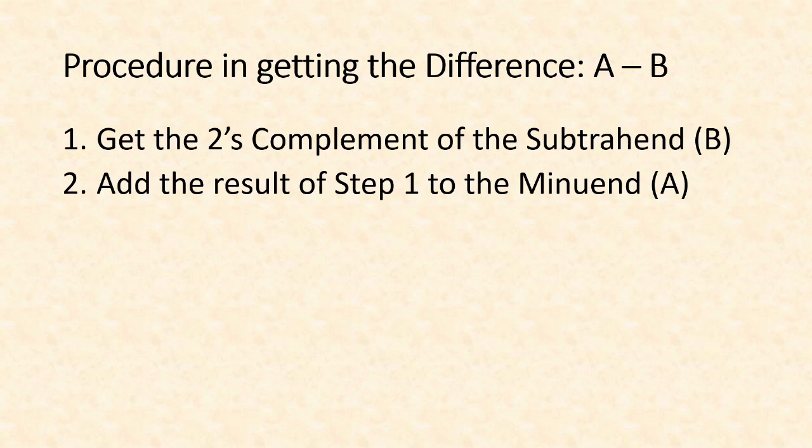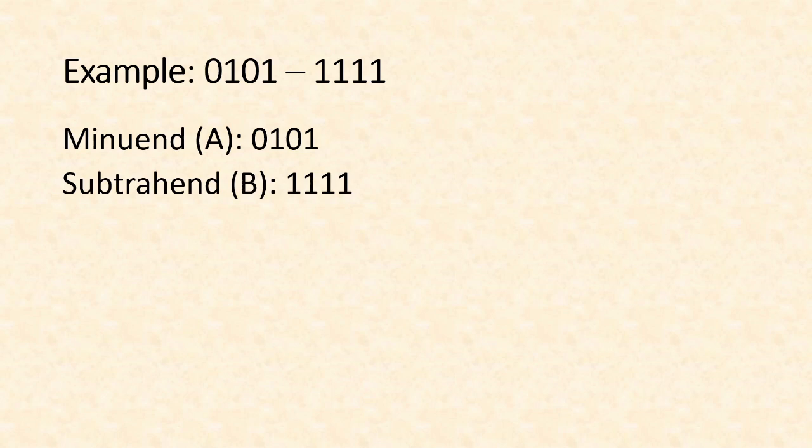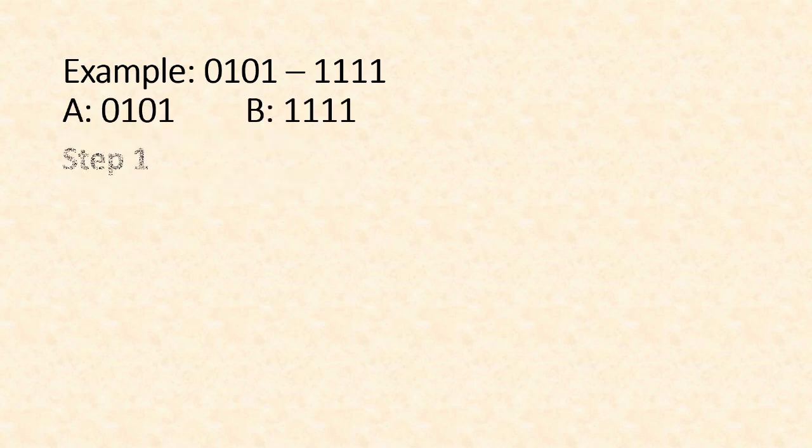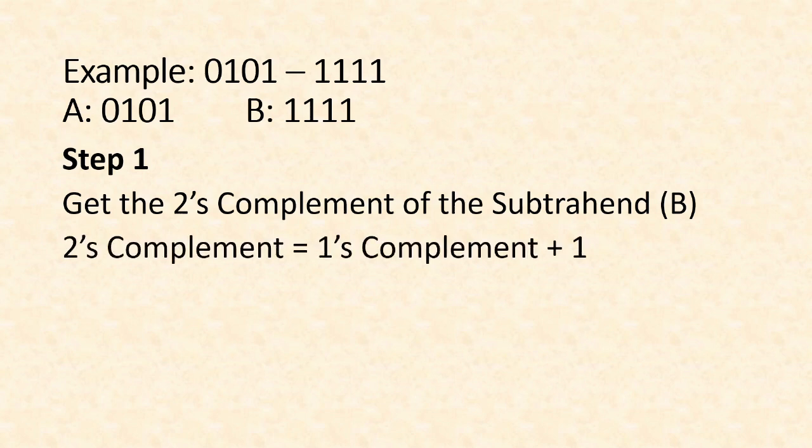Let's have an example. Let's say we want to perform 0101 minus 1111. So our minuend here is 0101 and our subtrahend is 1111. Let's perform the procedure or the steps. Step one will be to get the two's complement of B or the subtrahend. How do we get the two's complement? We learned from before that the two's complement is one's complement plus one.